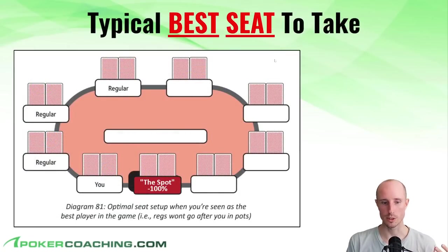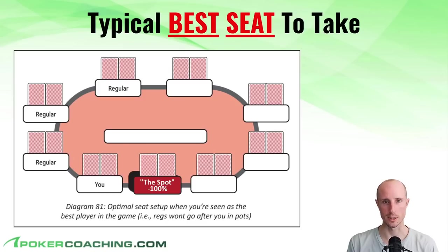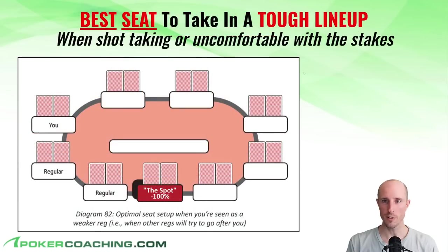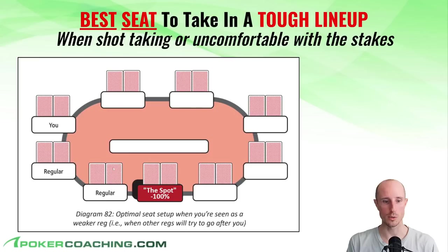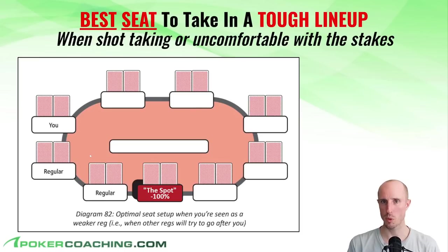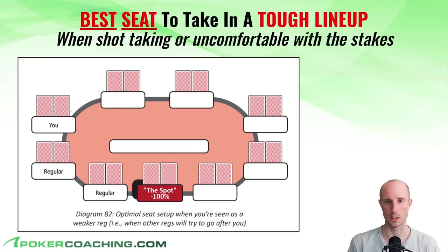If the regs are doing a lot of flatting and three-betting versus the recreational, you can play a tighter, more selective game — getting involved with good hands in spots that will almost always be big pots. The typical best seat when you're seen as one of the better players in the game is the one with direct position on the spot — the Jesus seat. However, if you're in a tough lineup when shot-taking, sometimes you'll want to sit to the left of the regulars and let them have position on the spot, especially when some regulars get maniacal or an extremely loose player isolates the spot a lot, inflating pots before action comes to you so you can play a really solid style.